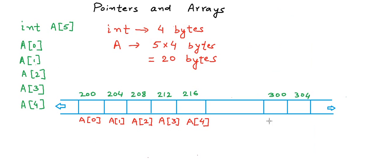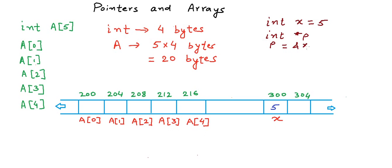Extending the memory a bit, let's say apart from this integer array A, I have an integer variable X with value 5 located at address 300. Now let's say I have a pointer to integer P, and in P I store the address of X. If we print P, the value in P would be 300, and if we dereference P and print *P, the value would be 5.